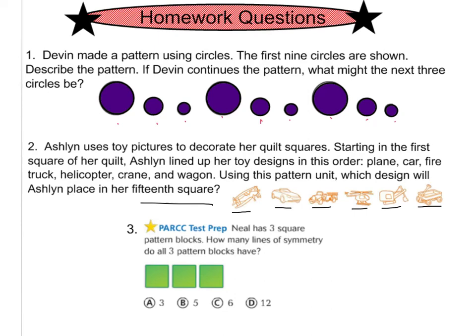Last but not least, this is question three. Neil has three square pattern blocks. How many lines of symmetry do all three pattern blocks have? This goes back to our lesson from yesterday, all about lines of symmetry. Remember, how many lines of symmetry does a square have? And that'll help you. And remember, he does have three square pattern blocks.